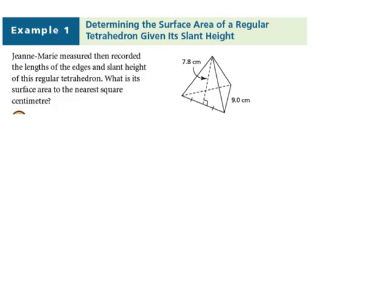Determine the surface area of a regular tetrahedron given its slant height. Jean-Marie measures and records the lengths of the edges and slant height of his regular tetrahedron. What is its surface area to the nearest square centimeter? A tetrahedron is composed of four congruent triangles. If we find the area of one triangle, we multiply by four to get the total surface area.